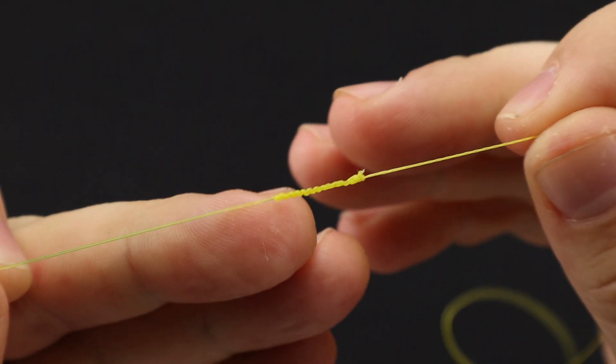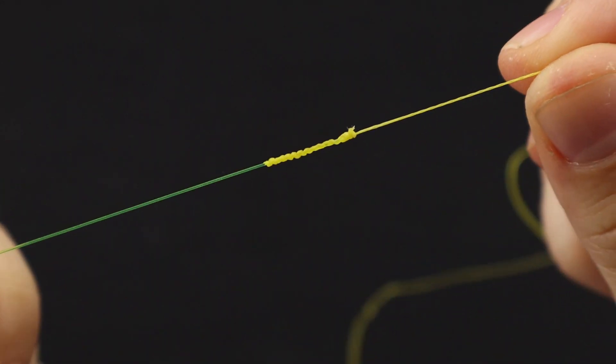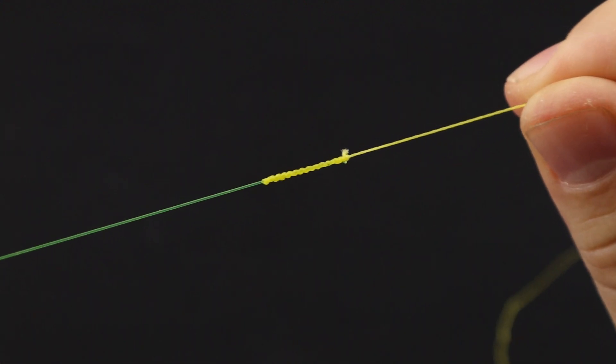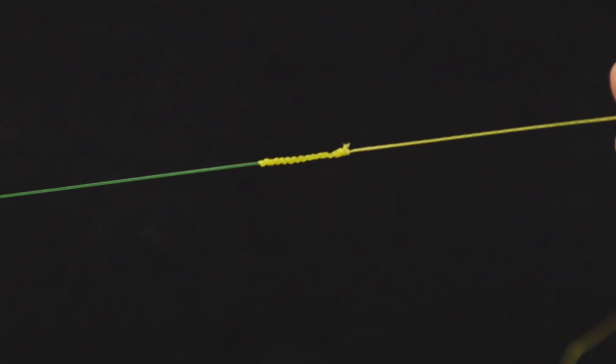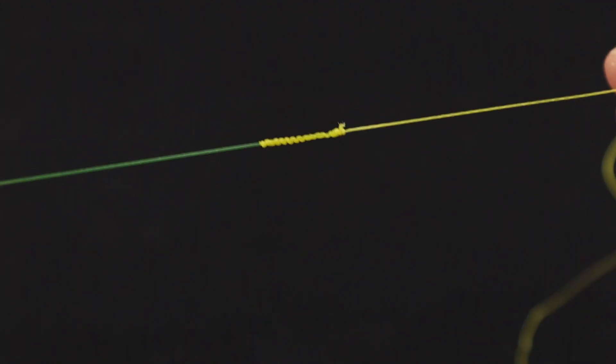Hello everybody, welcome back to Fish That Won't Quit. Today I'm going to show you how to tie the FG knot. The FG knot is one of the strongest knots used to tie braid to monofilament or braid to fluorocarbon, but it is one of the more difficult knots to learn. So let's get started.